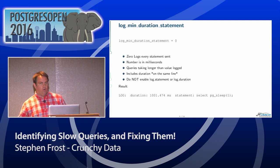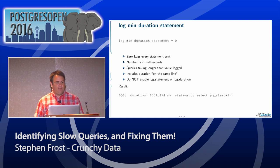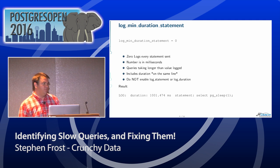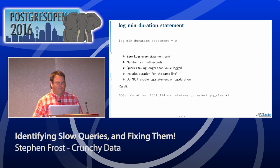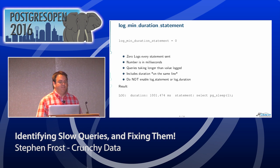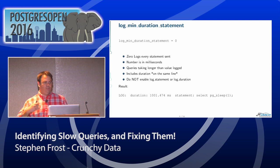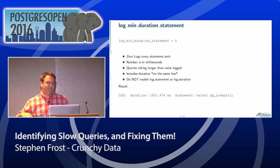First off, log_min_duration_statement. Setting it to zero means you're going to log every single statement sent. If you want to be a little less aggressive, you can set a number above zero — the number is in milliseconds by default, though you can add what unit you want. Whenever a query takes longer than that threshold, Postgres logs the query, and that log includes the duration on the same line as the query. Here you can see a duration of a one-second query, about a thousand milliseconds, with both duration and statement on the same log line.